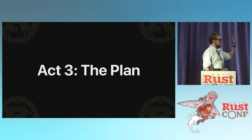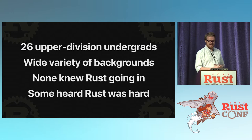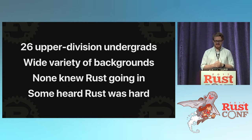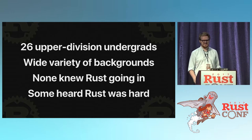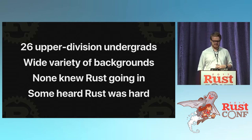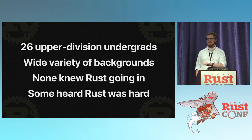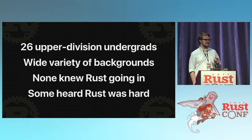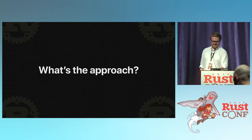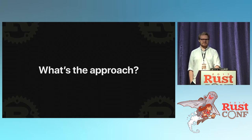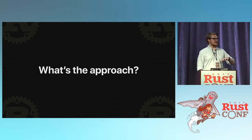So what's the actual plan? The class is a fairly small class — 26 upper division undergrads, juniors and seniors — with a whole bunch of backgrounds. Some of them have been programming since they were in their cribs; others have been programming for just a year or two. None of them knew Rust going in, but some of them had heard that Rust was hard and scary and didn't want to try it.